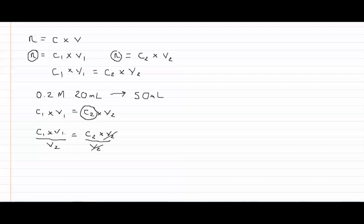C2 equals C1 times V1 over V2. And now we can add in our known values. So the initial concentration we've said is 0.2 molar or 0.2 moles per liter. Our initial volume is 20 mils.